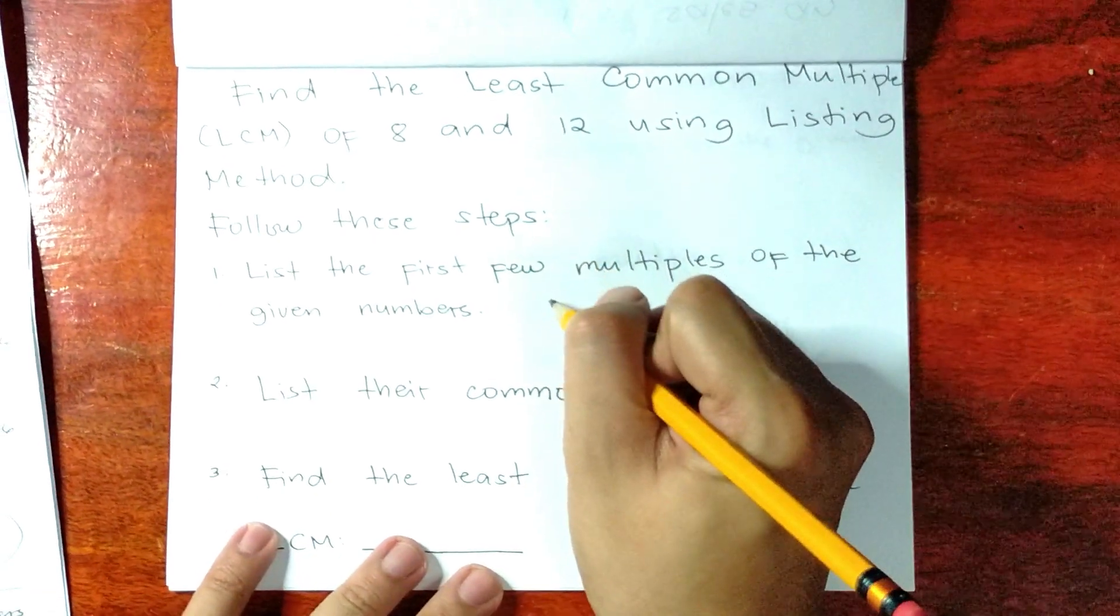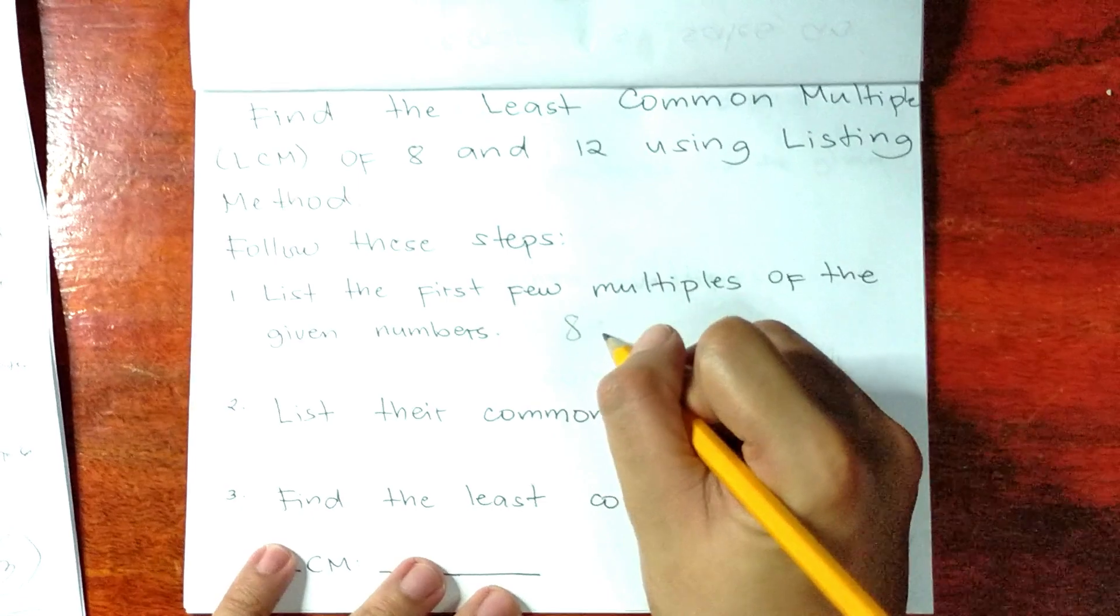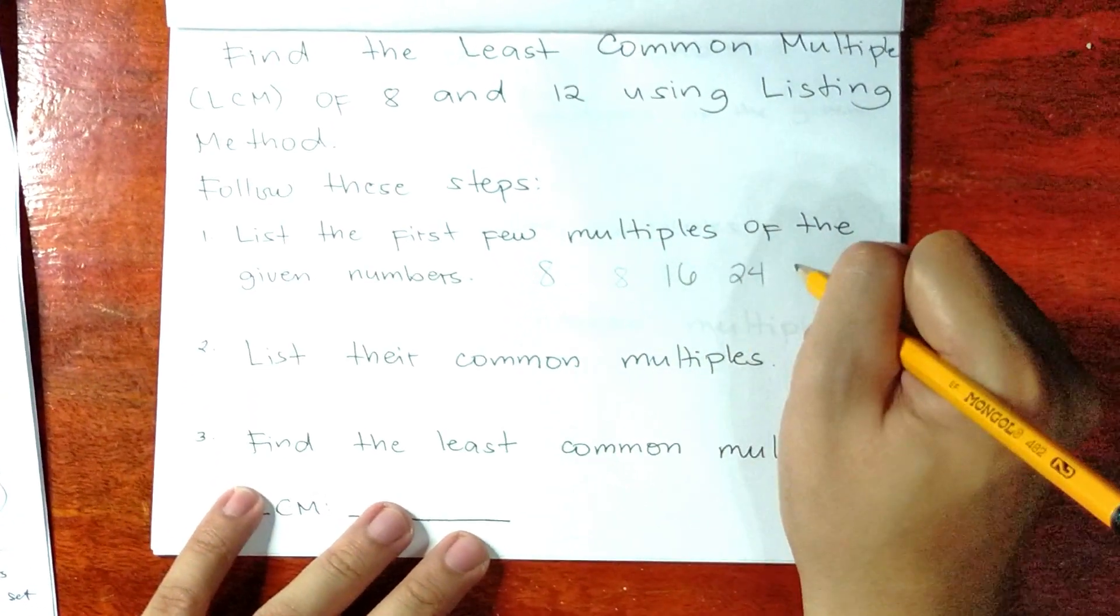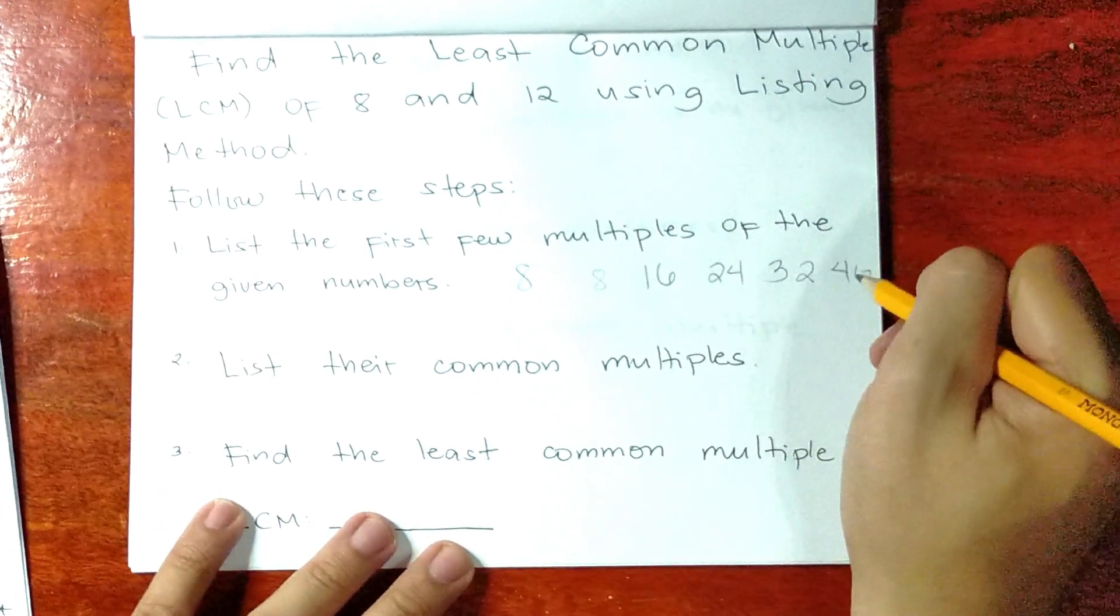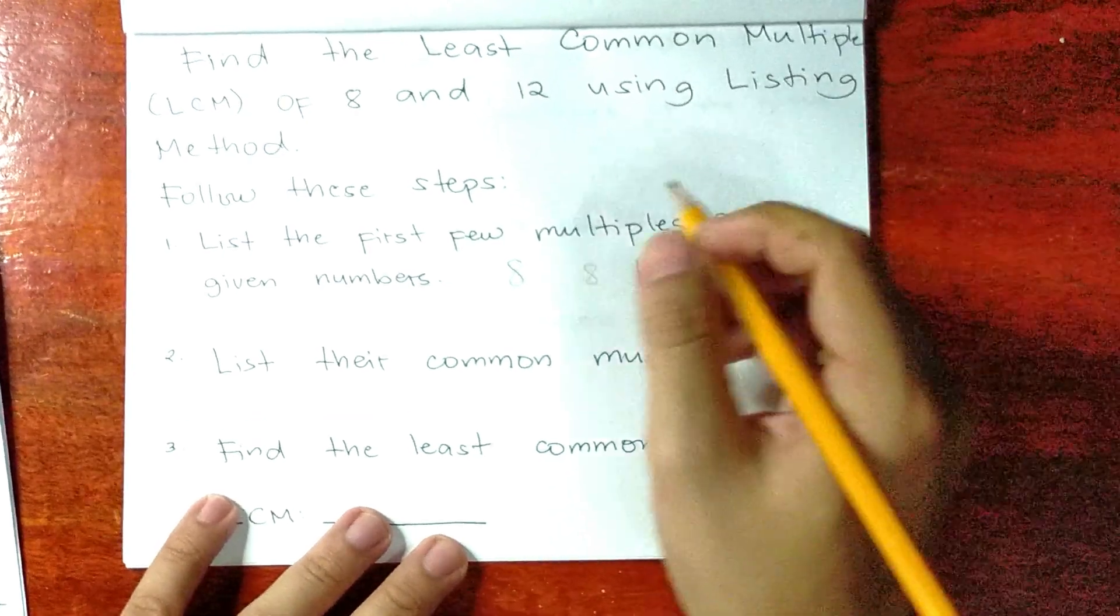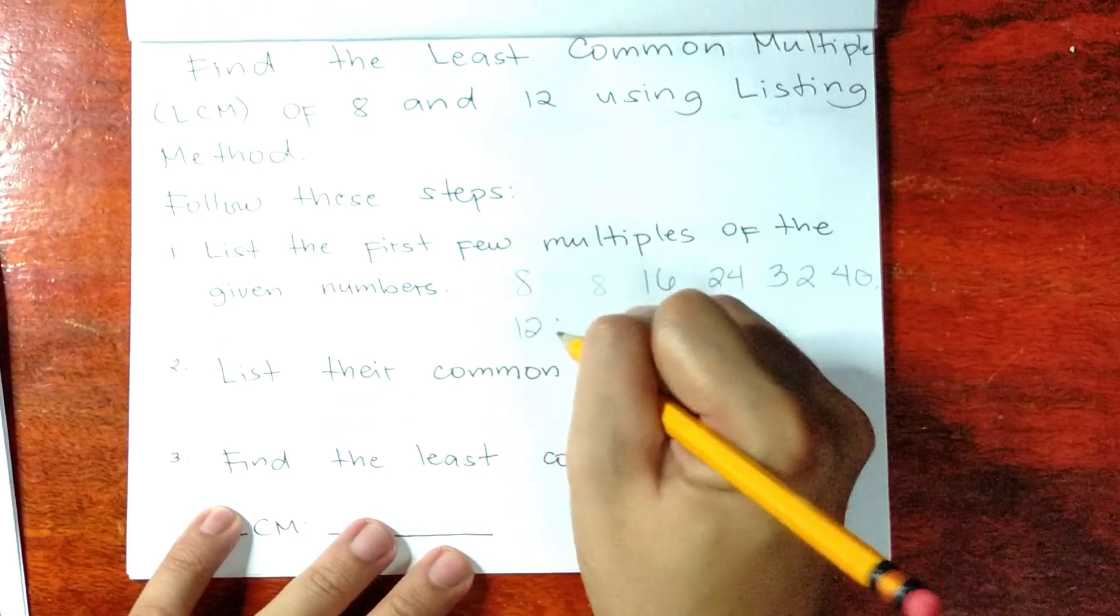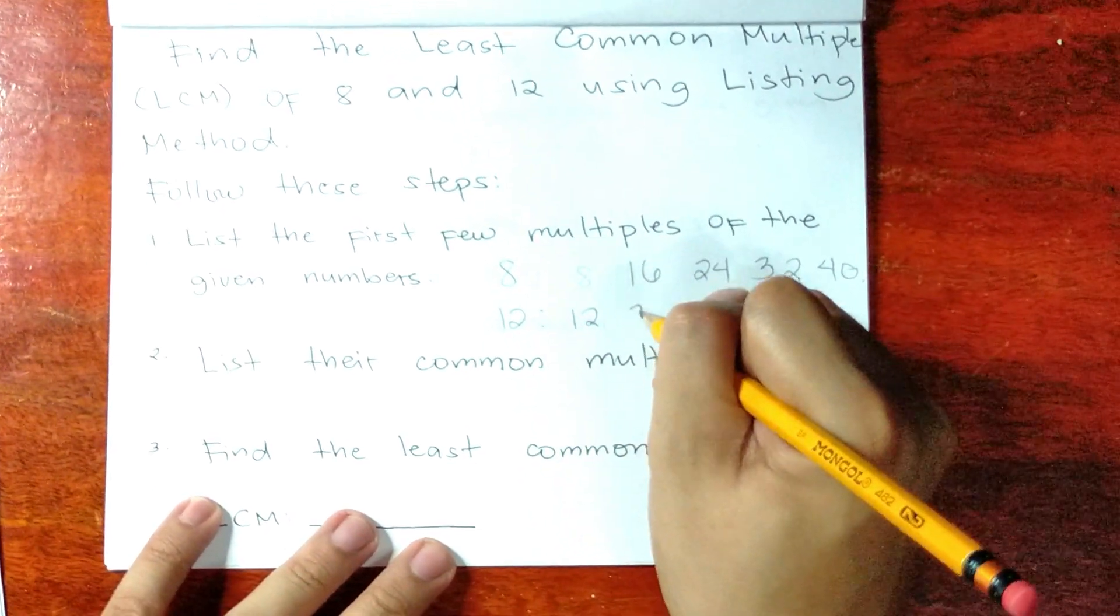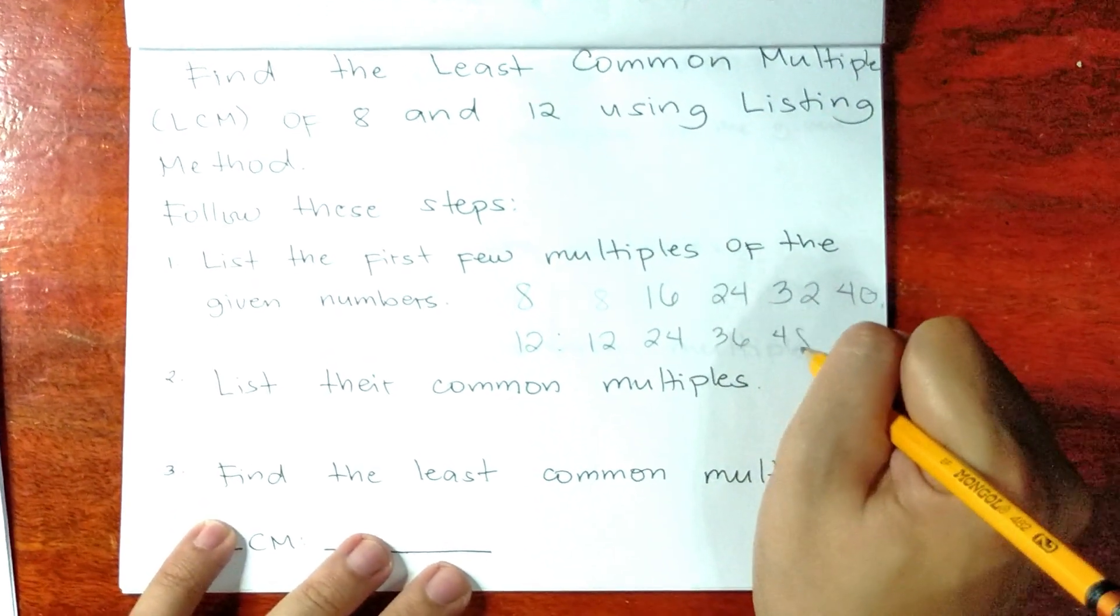Let's have number 8: 8, 16, 24, 32, 40. Next, let's have 12: 12, 24, 36, 48.